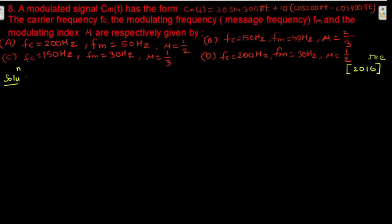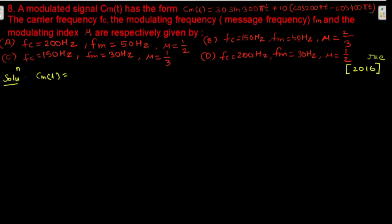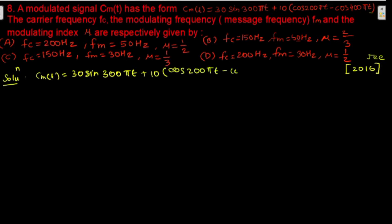So, in the question we have to find carrier frequency fc, modulating frequency fm, and modulation index mu. We will write this equation as it is: c(t) = 30 sin(300πt) + 10[cos(200πt) − cos(400πt)].